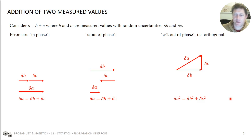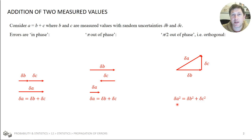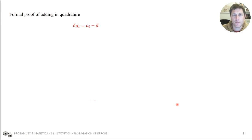Here we can see the first example of how errors can be propagated. We know the error in B, we know the error in C, and now we can see how that propagates into an error for A. That's very useful because we can take individual measurement errors calculated from instruments and measurements, and see how they propagate into the final quantities we want to find. Let's look at this in more detail and more rigorously — this is the proof of the propagation of errors when adding in quadrature.